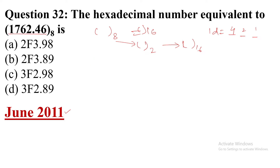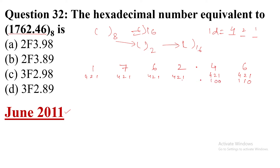Now I am writing the octal digits separately: 1, 7, 6, 2 point 4, 6. Each octal digit is converted to its 3-bit binary equivalent. So: 1→001, 7→111, 6→110, 2→010, and after the decimal point 4→100, 6→110. This gives us the full binary representation.